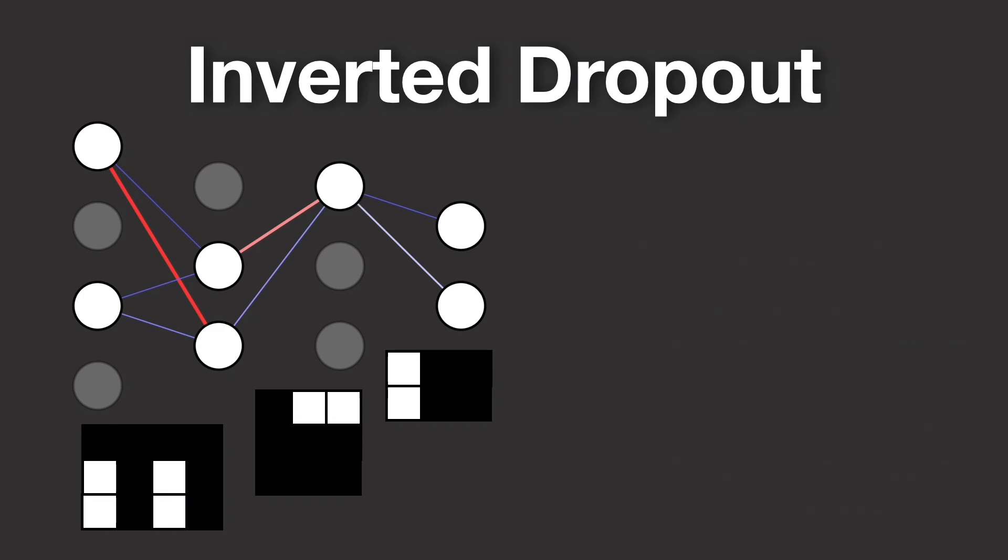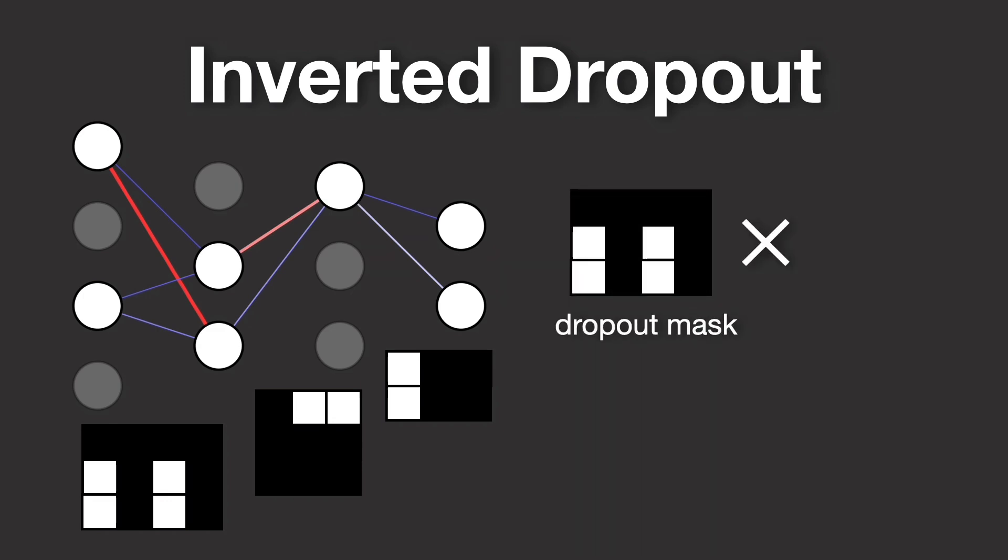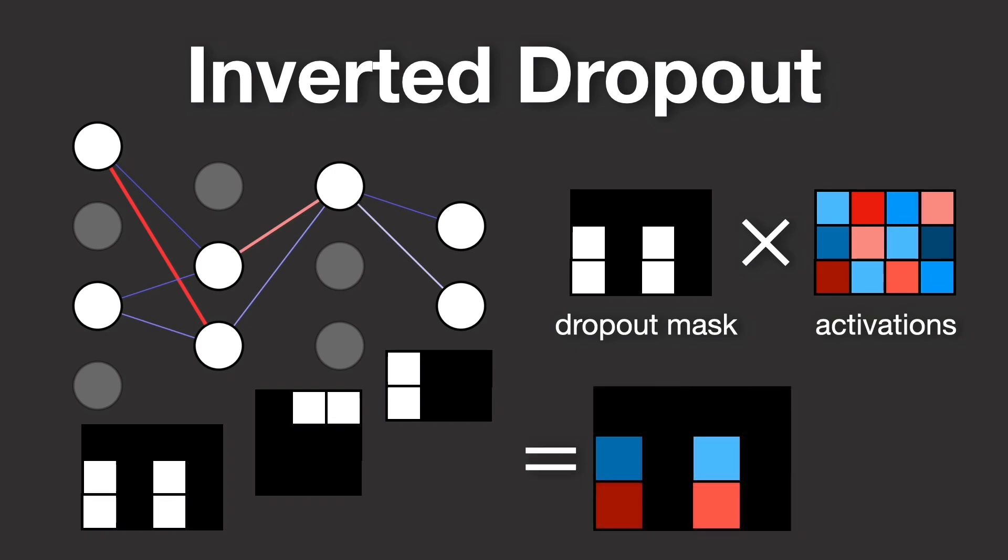You then perform elementwise multiplication between this mask and the layer's activations, effectively zeroing out the neurons that are dropped. Because this process reduces the overall activation, you scale the remaining neurons by dividing by the keep rate. This ensures that the expected value of these activations remains the same whether dropout is applied or not, keeping the network's behavior consistent.